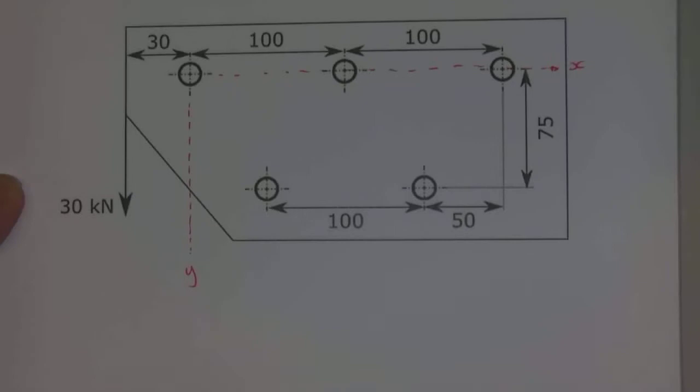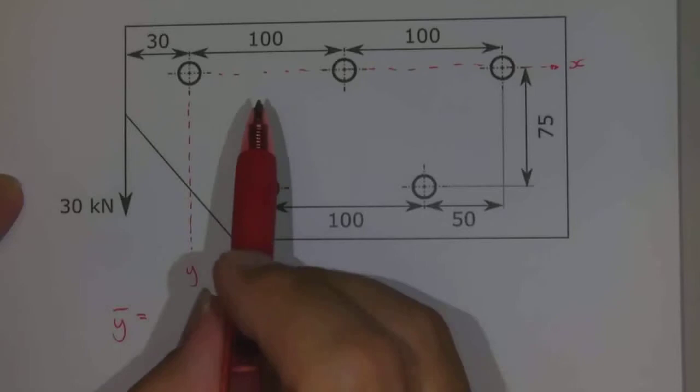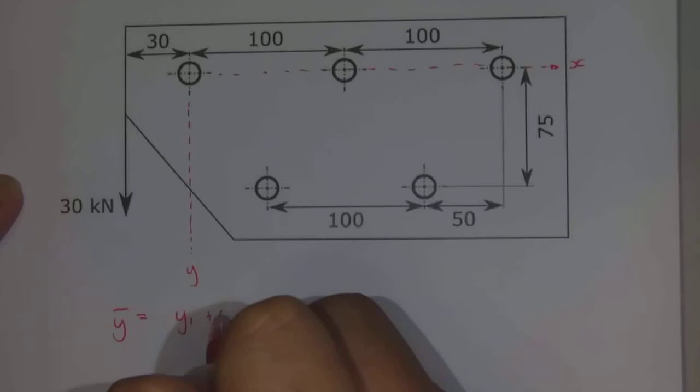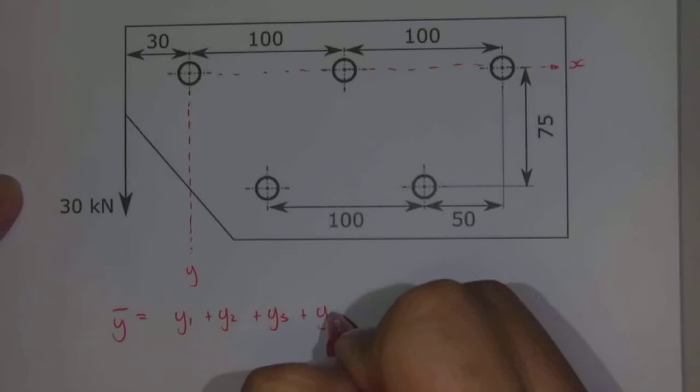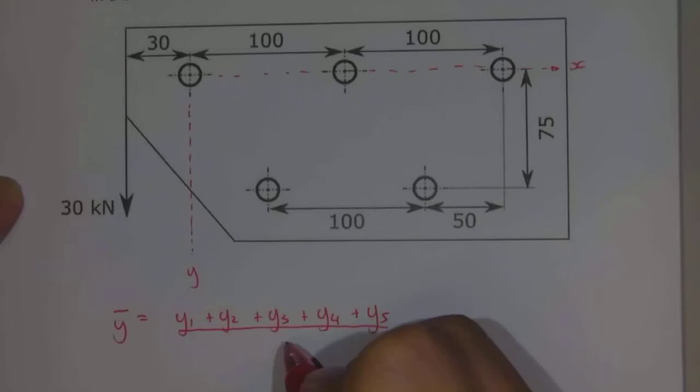The formula that we'll use is as follows. So y bar is equal to each of the y coordinates for each of these bolts, so y1 plus y2 plus y3 plus y4 and y5, and then all of this divided by how many bolts we've got, where n is the number of bolts.